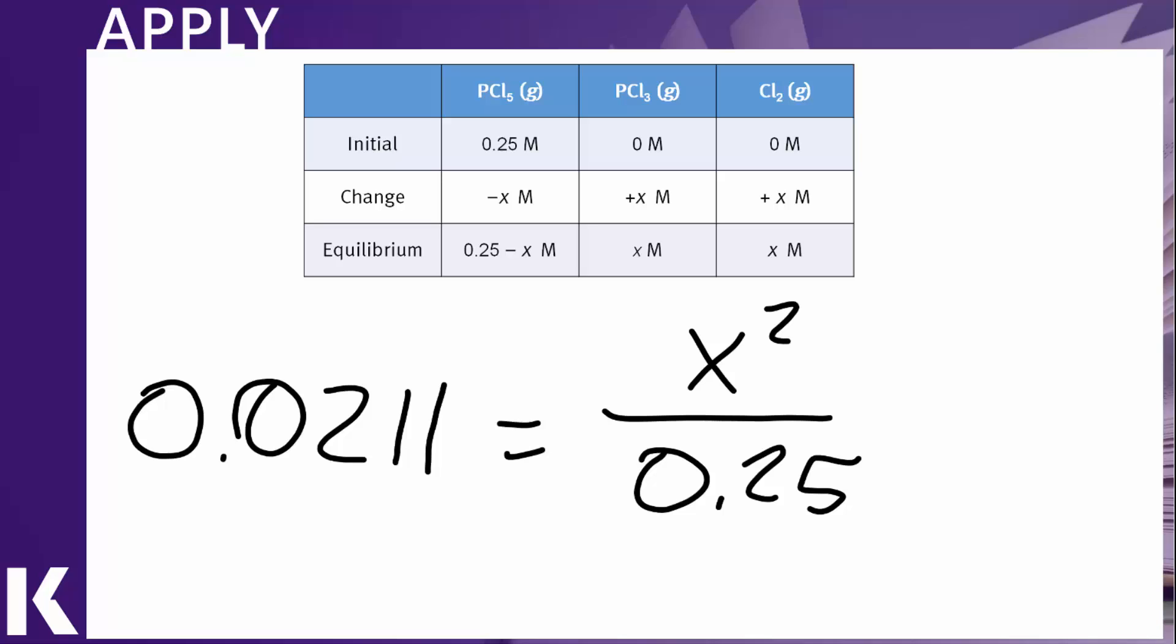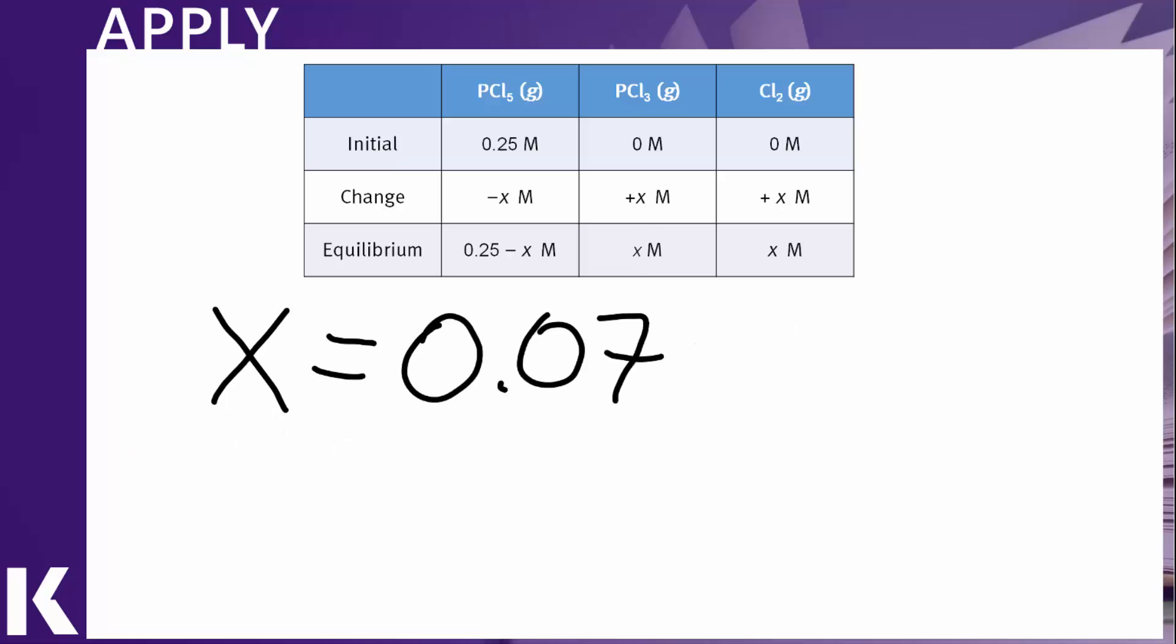KEQ is 0.0211. X and X are both concentrations of the products. Therefore, that's X squared. And in the denominator for the concentration of our reactant, we will again make this simplification and assume that X is very small compared to 0.25. So we'll just say 0.25. Therefore, we go ahead and solve for the value of X. We find that it is 0.07.